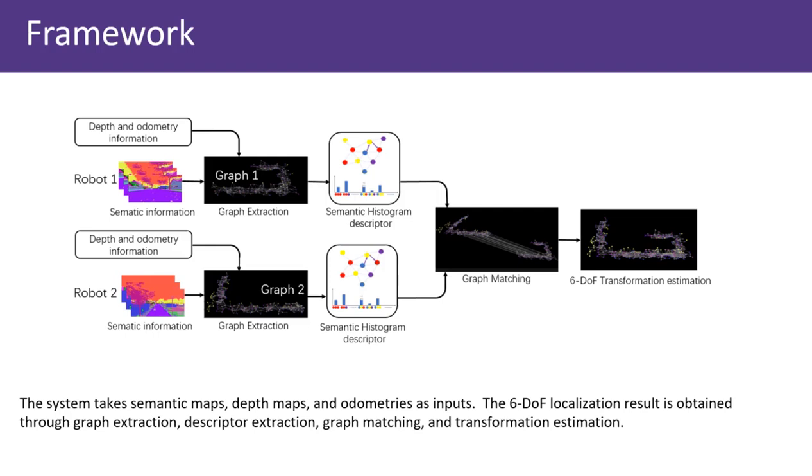So, to overcome the difficulties, we proposed a novel histogram-based descriptor to enable real-time graph matching under large viewpoint changes. Based on the new descriptors, we develop a new graph-based global localization system for multi-robot SLAM. The system takes semantic maps, depth maps, and odometries as inputs.